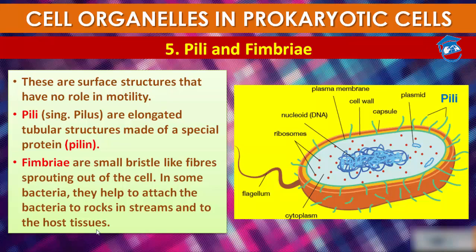Flagellum helps in the motility of bacterial cells. Bacterial cells may be motile or non-motile; if motile, they have thin filamentous extensions from the cell wall called flagella. Bacterial flagellum is composed of three parts — filament, hook, and basal body — and the filament is the longest portion, extending from the cell surface to the outside.